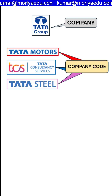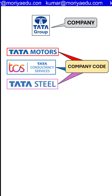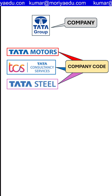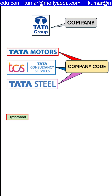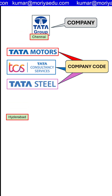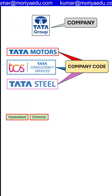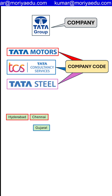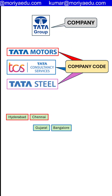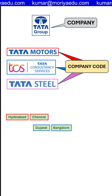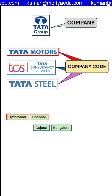Each company code has branches based on geographical locations. For example, Tata Motors has its branches in Hyderabad and Chennai, and TCS also has its branches in Gujarat and Bangalore.